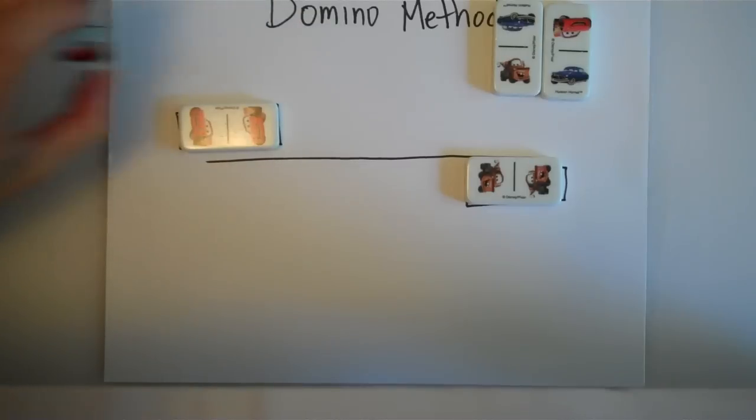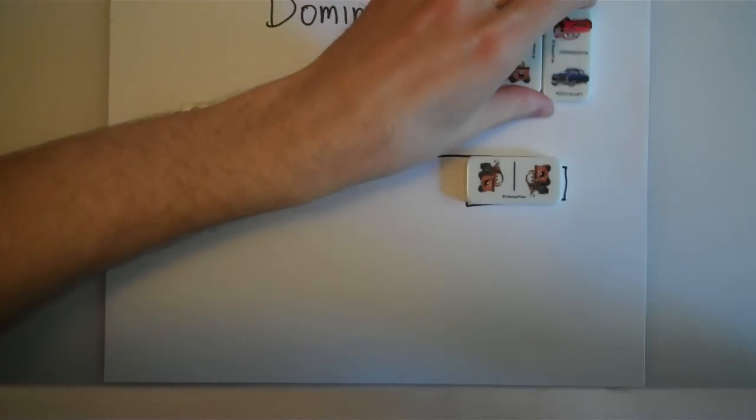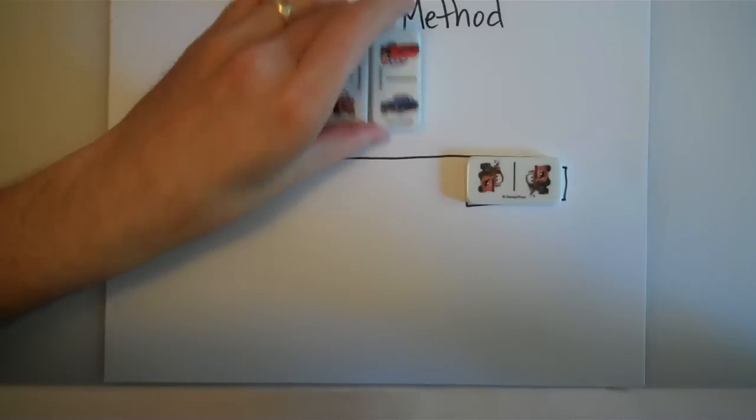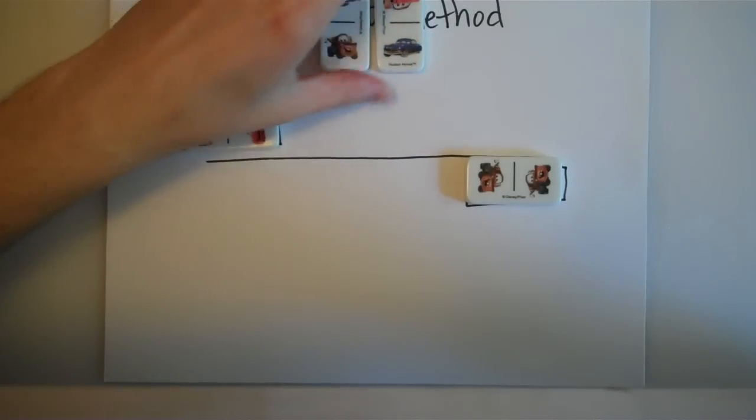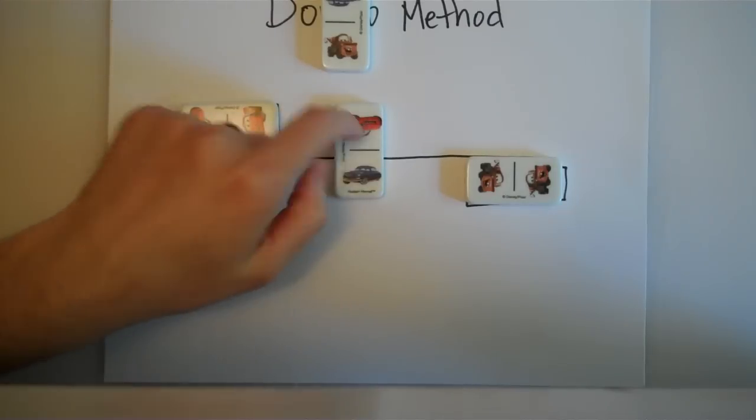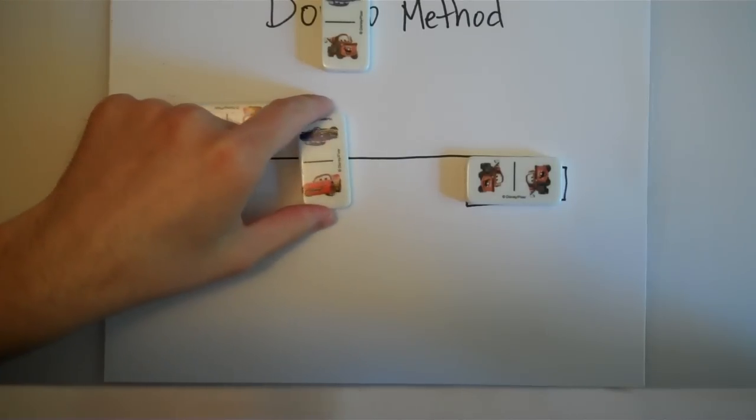Now let's say that we lost this domino or we didn't have it to begin with. We could do the exact same thing with these dominoes here. It would take two steps instead of just one, but that's just fine. First, because I have Lightning McQueen right here in the top, I'm going to use the domino with Lightning and put him on the bottom.